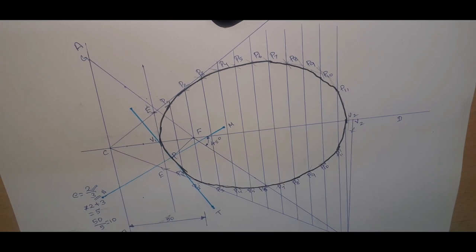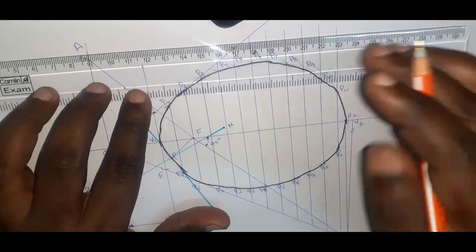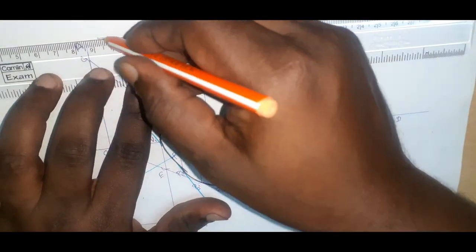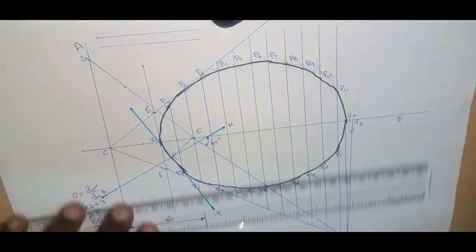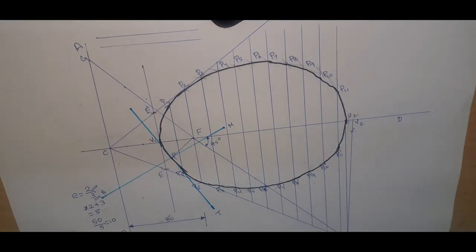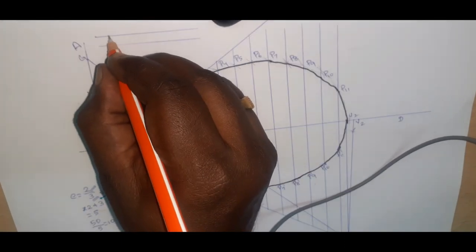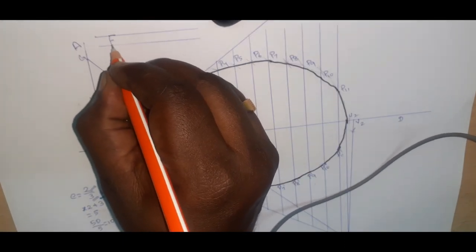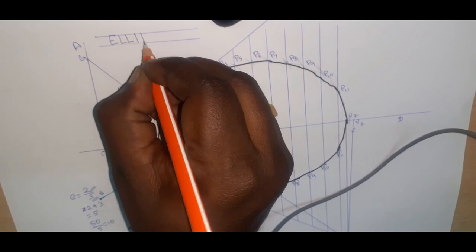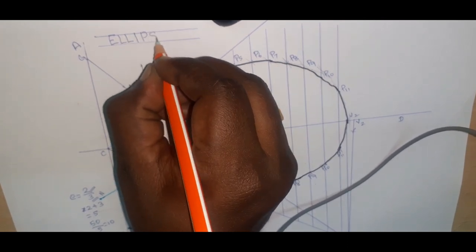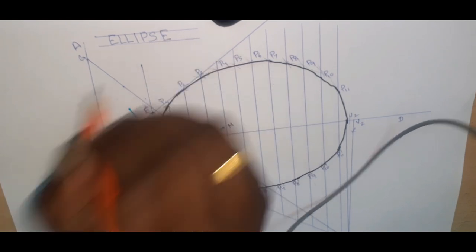Another thing is also pending — we need to write a double line with some distance. Here you need to write the name of the conic: Ellipse.